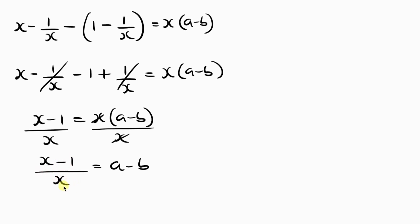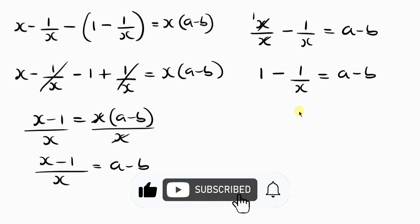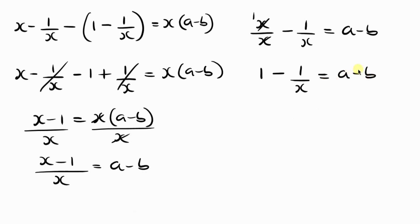Now I need to separate the fraction. I write x divided by x minus 1 divided by x, equal to a minus b. So x over x is 1, giving 1 minus 1 all over x equal to a minus b. Flipping the position, a minus b equals 1 minus 1 all over x. I'll call this Equation 2.